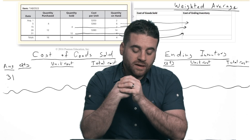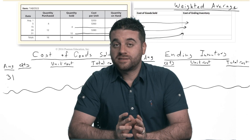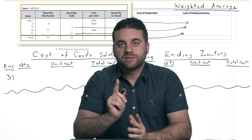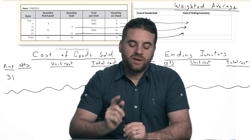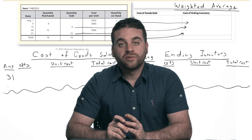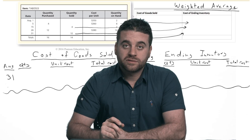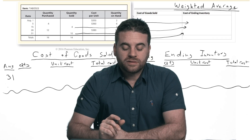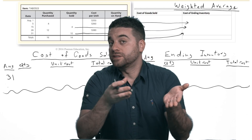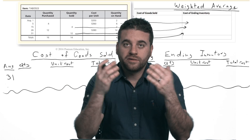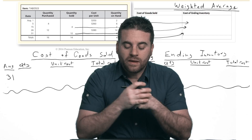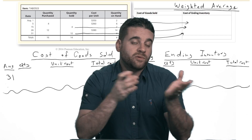Let's start with the weighted average. With periodic, you're going to do less work, less calculation — it's easier because you only have to do your calculation once a month, which is the last day of the month. For the month of August, using that same table from previous videos, I only have to calculate cost of goods sold and cost of ending inventory on August 31st, one time only. We're going to combine all the units sold during the month and consider that we sold them all on the same day — August 31st.